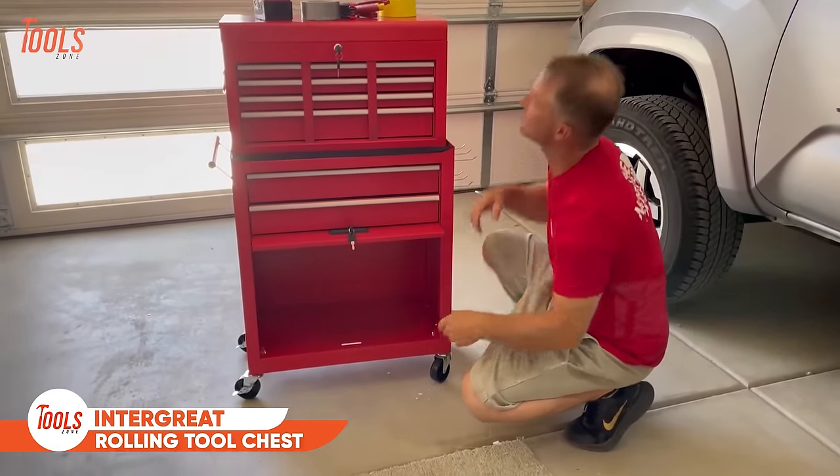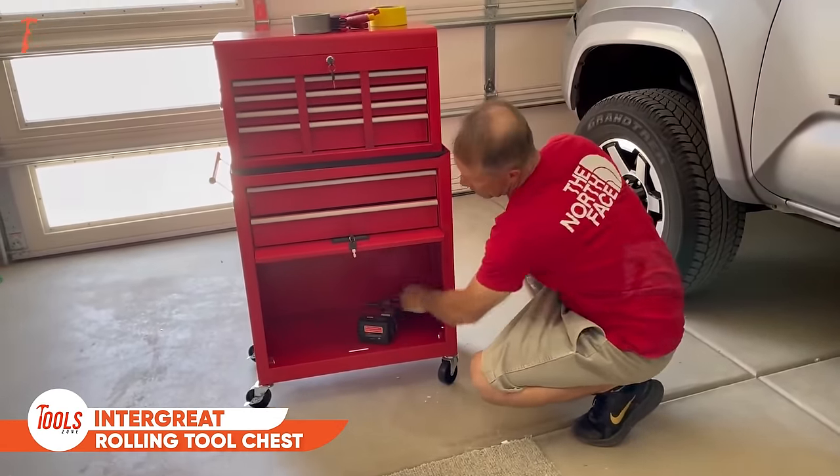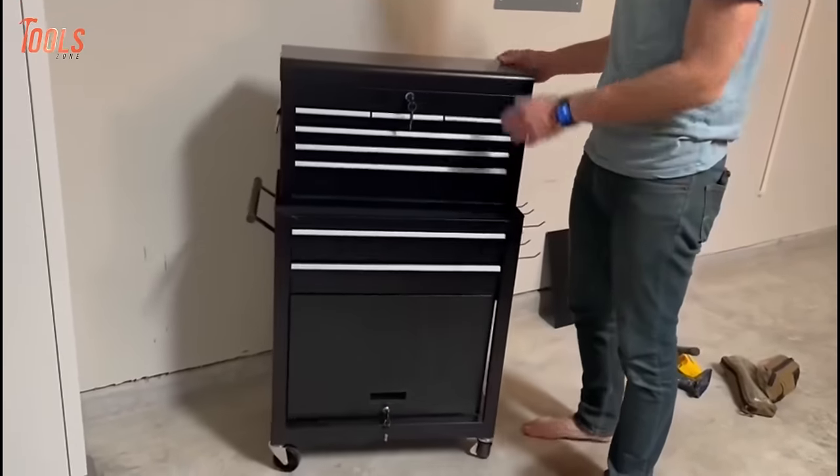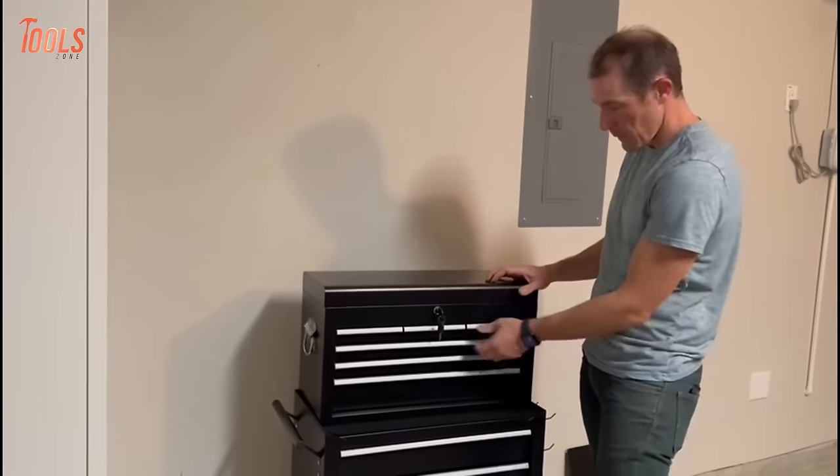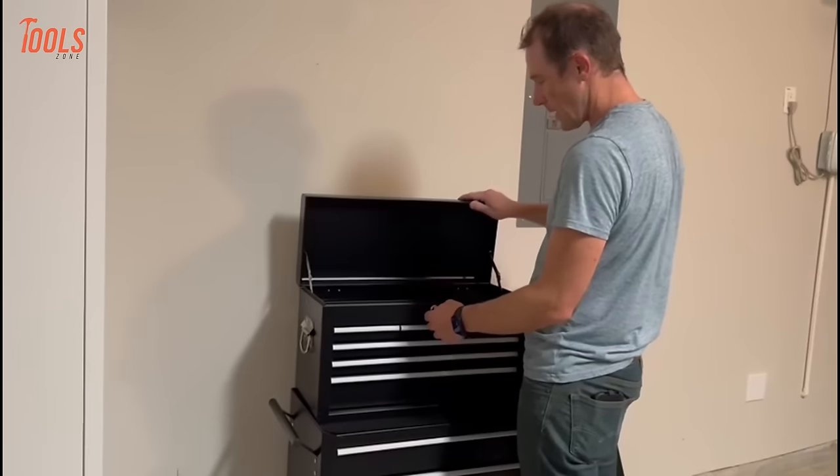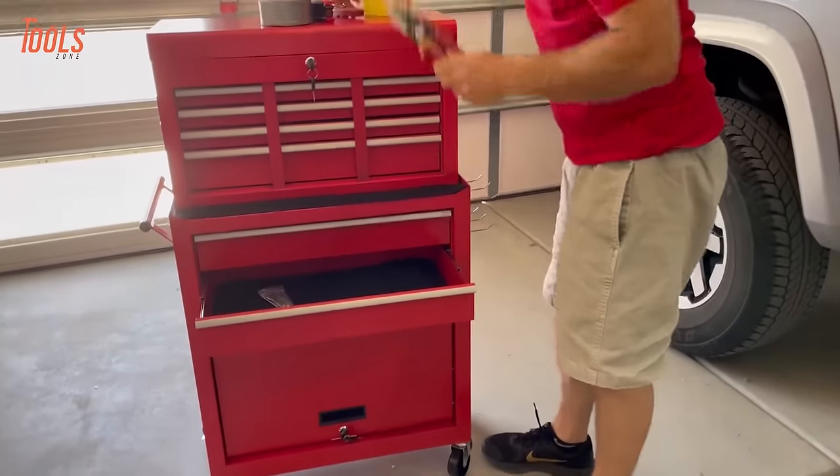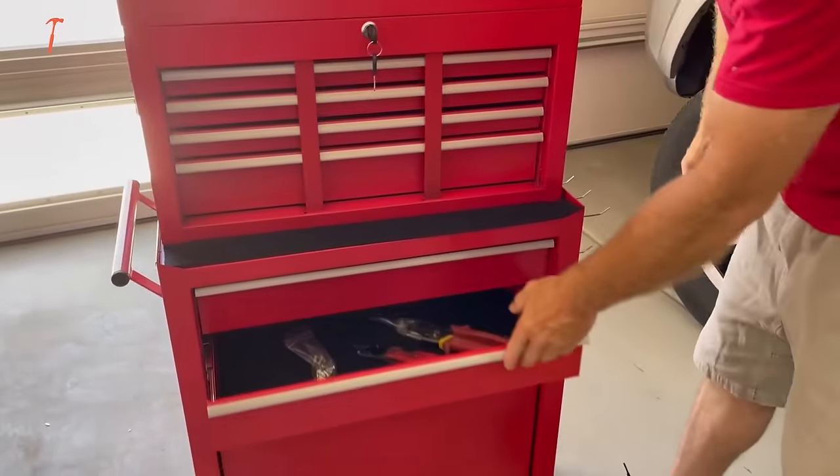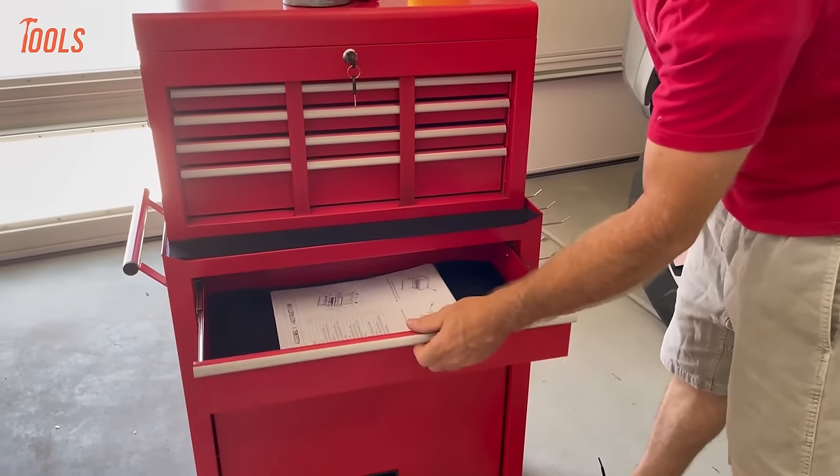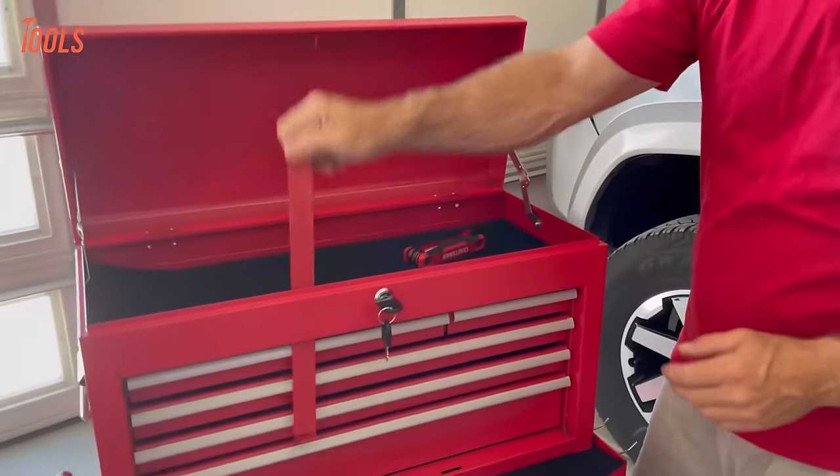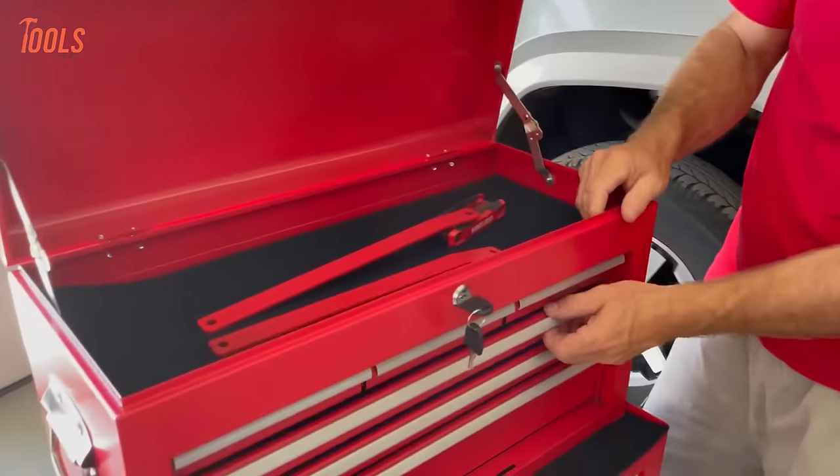Every handyman needs a durable, organized tool storage solution like this InterGrate rolling chest. Made from sturdy, powder-coated steel, it's built to withstand tough job sites. Eight sliding drawers of varying sizes provide ample storage for all your tools and accessories. Detachable top and bottom sections allow separating the chest as needed. Four swivel casters, two with brakes, make it easy to roll the heavy chest around the workspace. Interior liners protect your tools from scratches. Multiple handles give you a solid grip when lifting the top box. This high-capacity chest keeps everything secure yet portable and within reach for maximum efficiency.